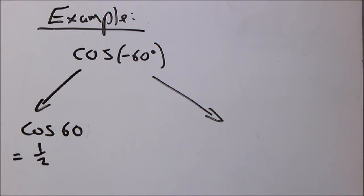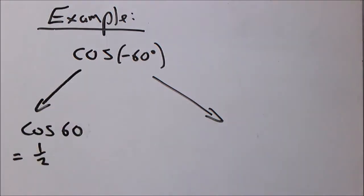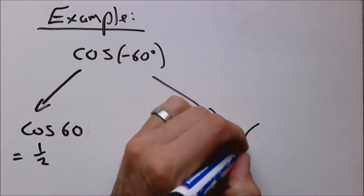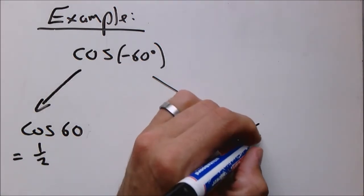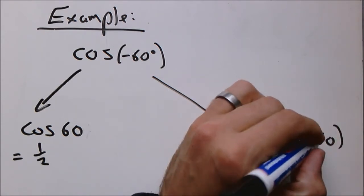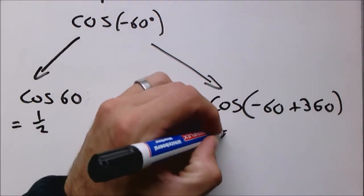So this is where if you are stuck, if you don't know what to do, you're a bit stressed or whatever, you're blanking the test, all you need to do then is say I am going to say negative 60 plus 360. And if I do that, it will become cos 300.